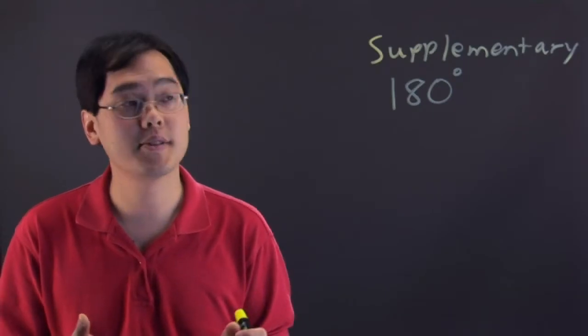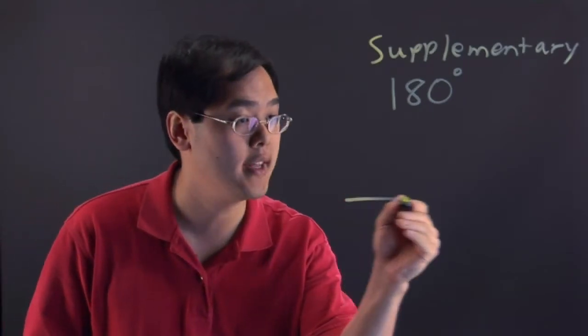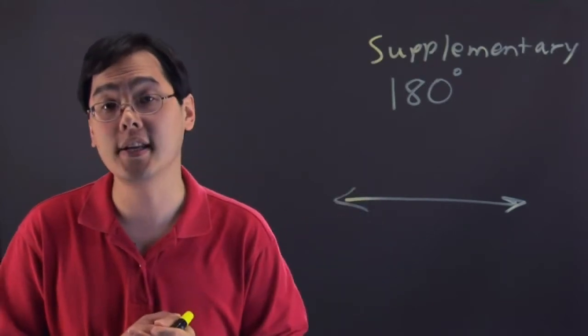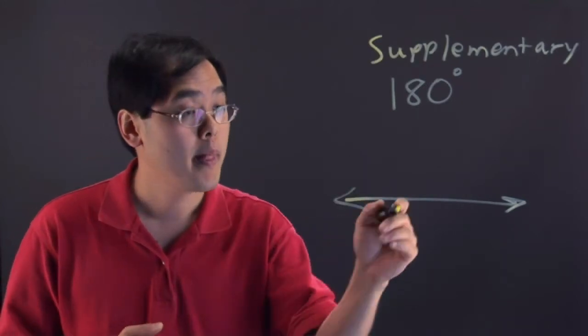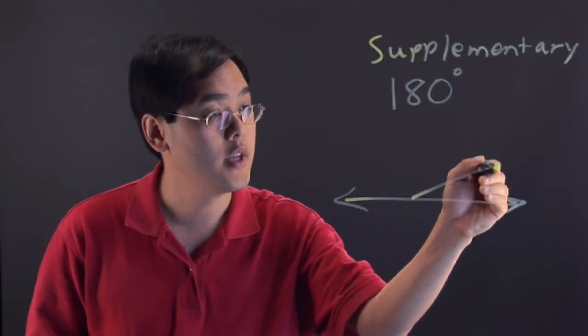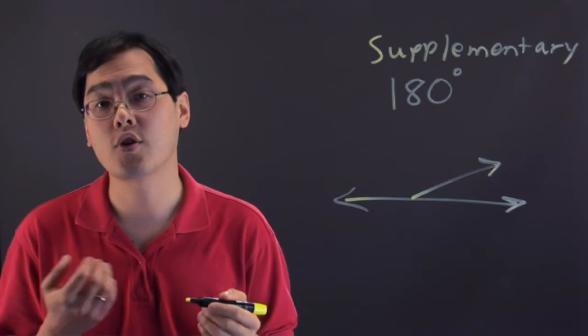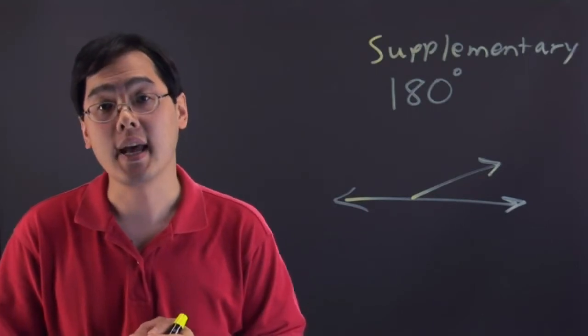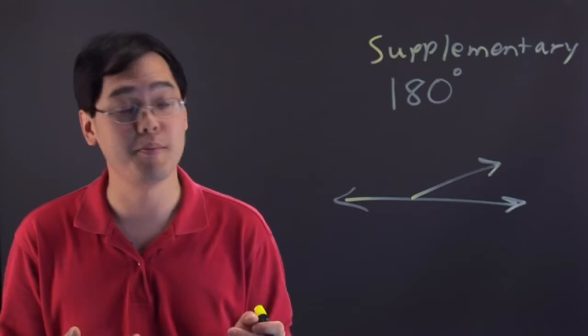But the simplest way to think about supplementary angles is that of a straight line, because a straight line is a 180 degree angle. Now if you were to split the straight line into two pieces, you'll have created two angles that are guaranteed to give you 180 degrees. And the two angles are called supplements.